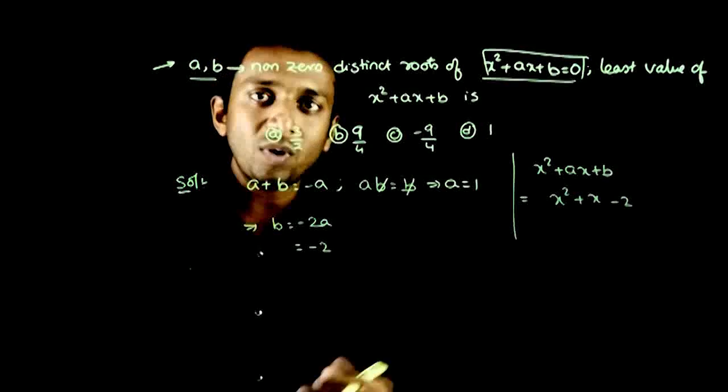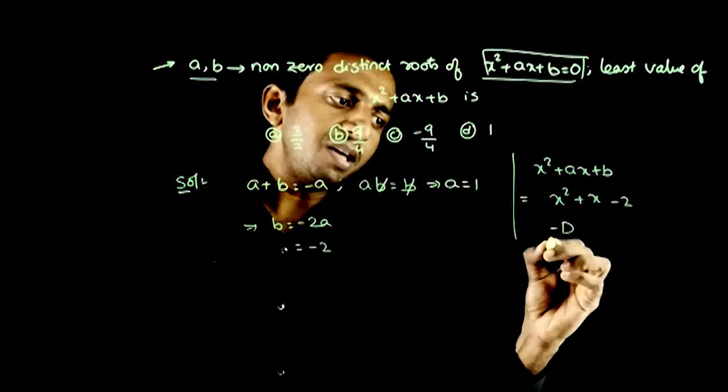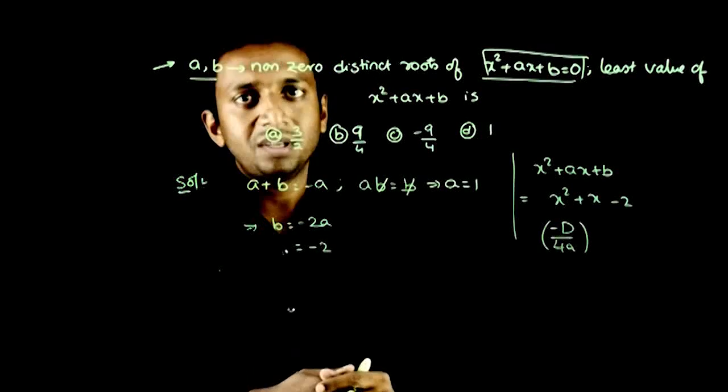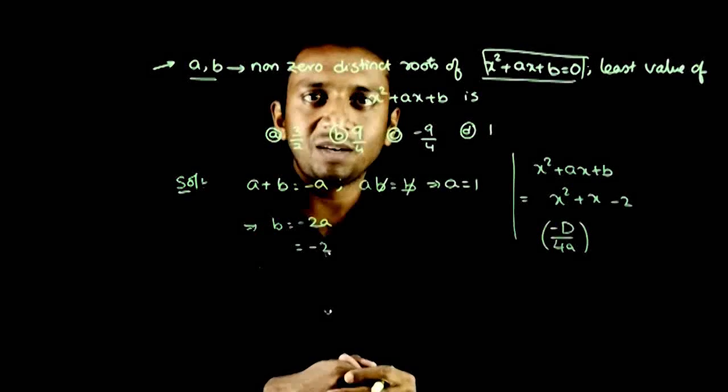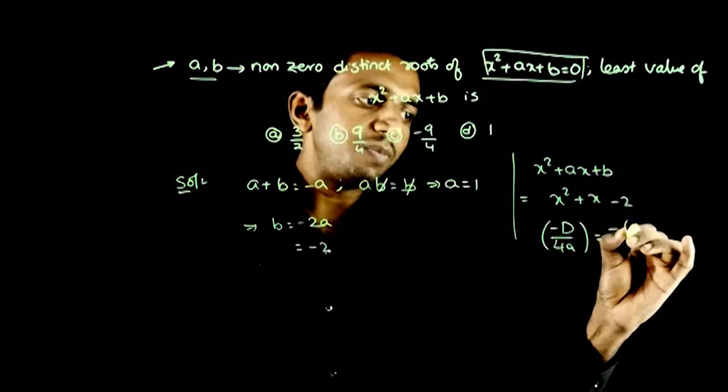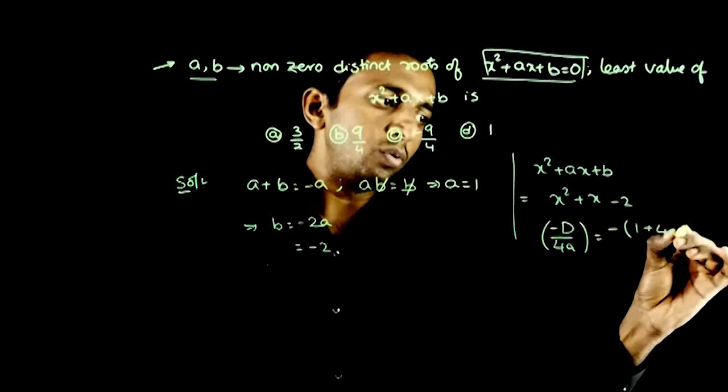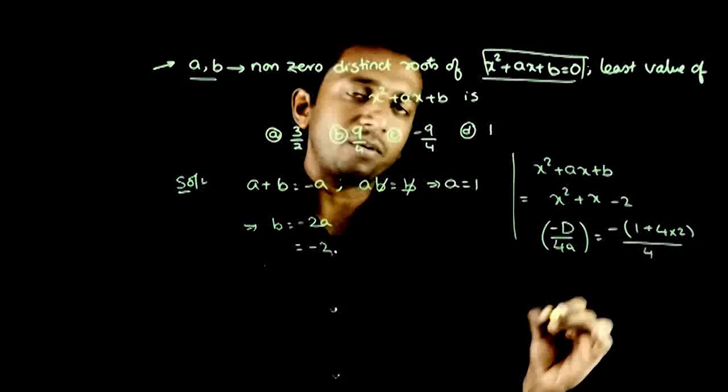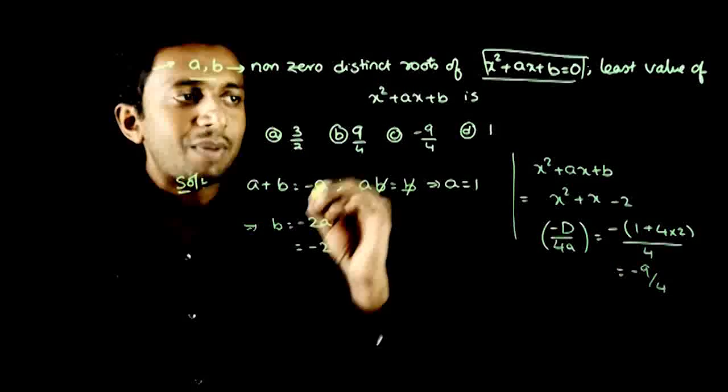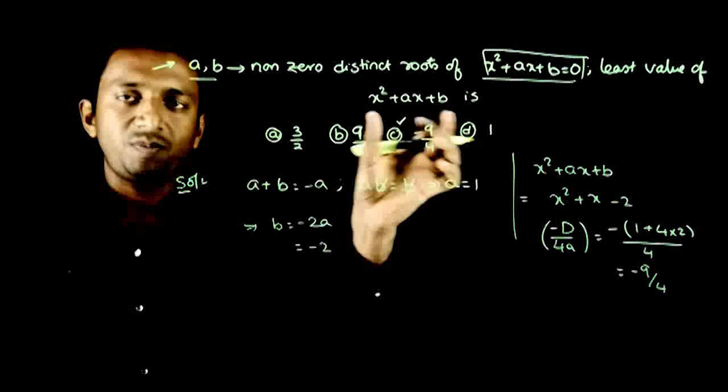So what is the least value of this? The least value formula is -D/4A, where a quadratic expression's least value is minus the discriminant divided by 4a. That equals minus of discriminant b² - 4ac, which is 1 + 8 = 9, divided by 4. That equals -9/4. So -9/4 is the least value of this quadratic expression.